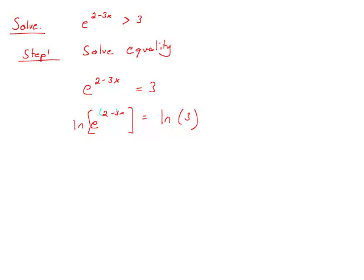And the key here is that this 2 minus 3x, we're going to be able to pull out of the exponent from our log properties. So I have 2 minus 3x times the natural log of e equals the natural log of 3. Well, natural log of e is just 1, and so we have 2 minus 3x times 1, which is just going to be the 2 minus 3x.